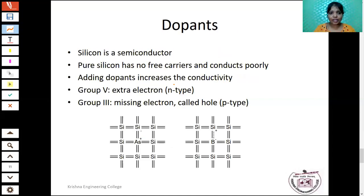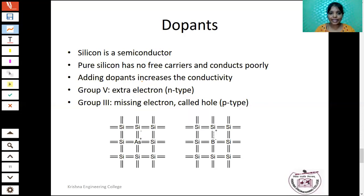Pure silicon material has no free carriers and very poor conductivity. That is why we perform doping — adding impurities to the pure semiconductor material — which increases the conductivity of the material. There are two types of semiconductor: intrinsic, which is the pure form, and extrinsic, which is the impure form where impurities are added to the pure semiconductor material.